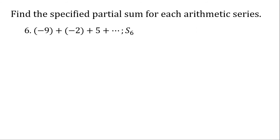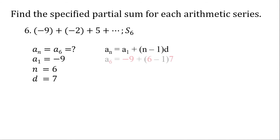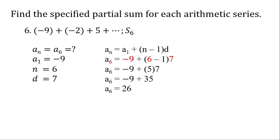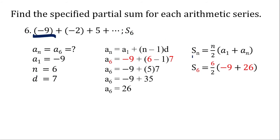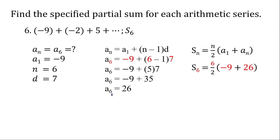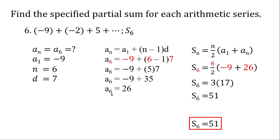For number 6, let's find the sixth term first. Substituting the values we have, we get 26 as our sixth term. Now let's solve for the sum of the first 6 terms. n is 6, a sub 1 is negative 9, and our last term is 26. 6 divided by 2 is 3, negative 9 plus 26 is 17, and 3 times 17 is 51. So the sum of the first 6 terms is 51.